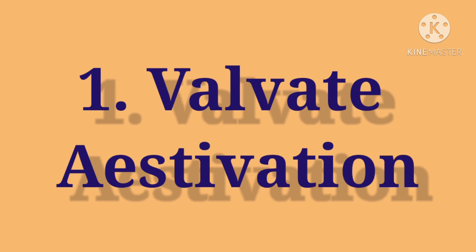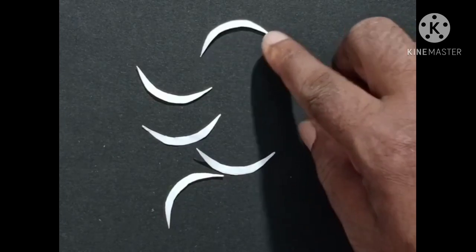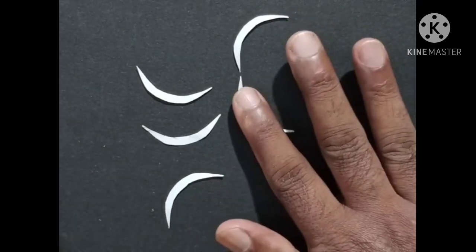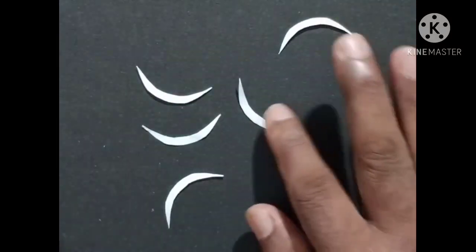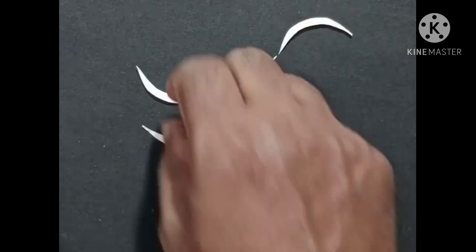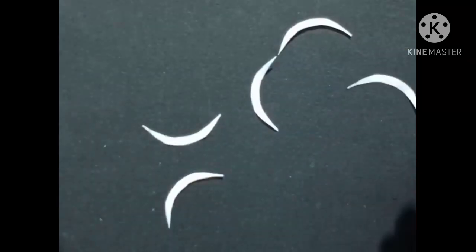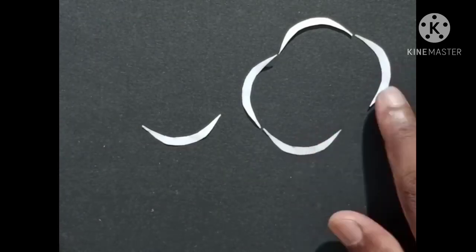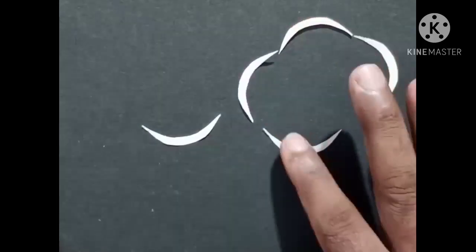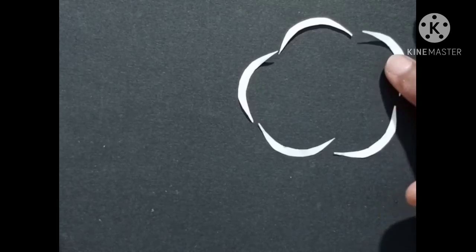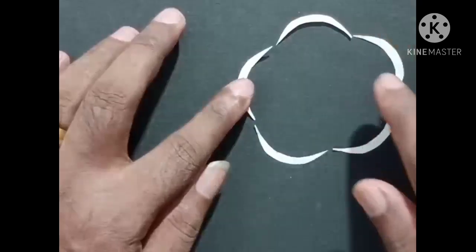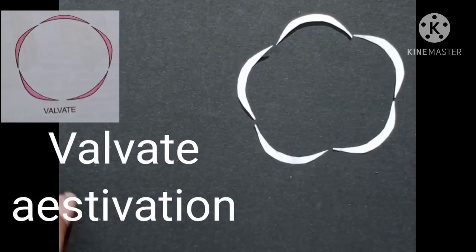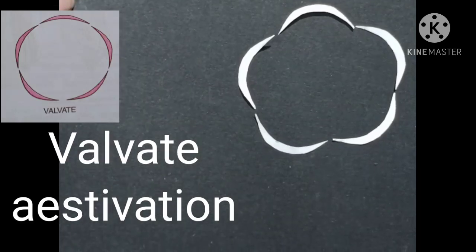The first is Valvate Estivation. The arrangement of sepals or petals in a flower bud where they just touch one another at the margins without overlapping is called Valvate Estivation.